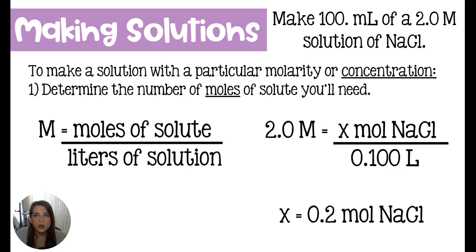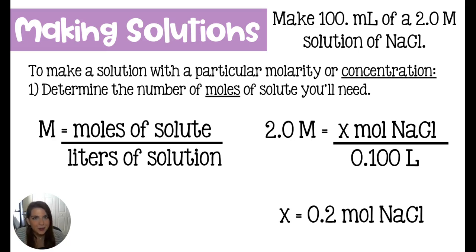In this case, we are asked to make a 100 milliliter solution of 2 molar NaCl. To make a solution with a particular molarity or concentration, you have to determine the number of moles of solute you're going to need to add to the water — how much stuff is really in there. We'll use our molarity equation: molarity equals moles of solute divided by liters of solution.